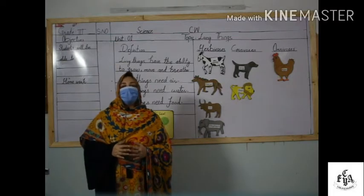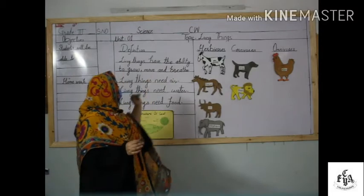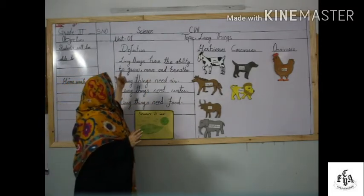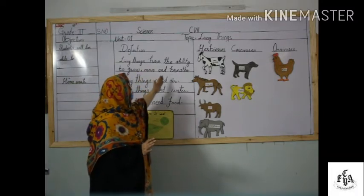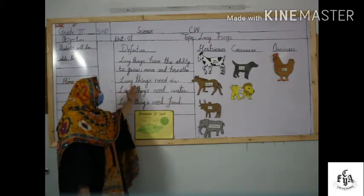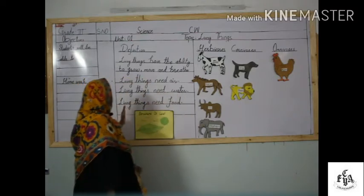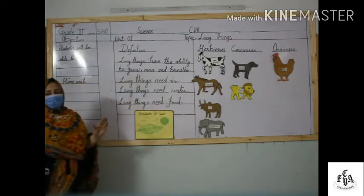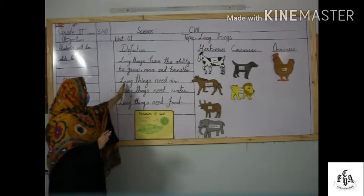I'm your science teacher. Today we will read the topic: living things. Students, do you know what living things are? Living things have the ability to grow, move, and breathe. You also know that living things need air, water, and food. I will discuss each topic one by one.